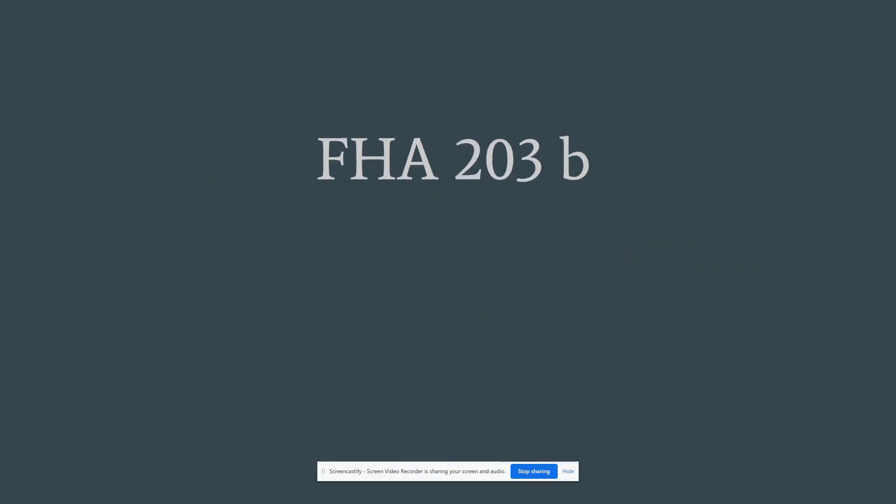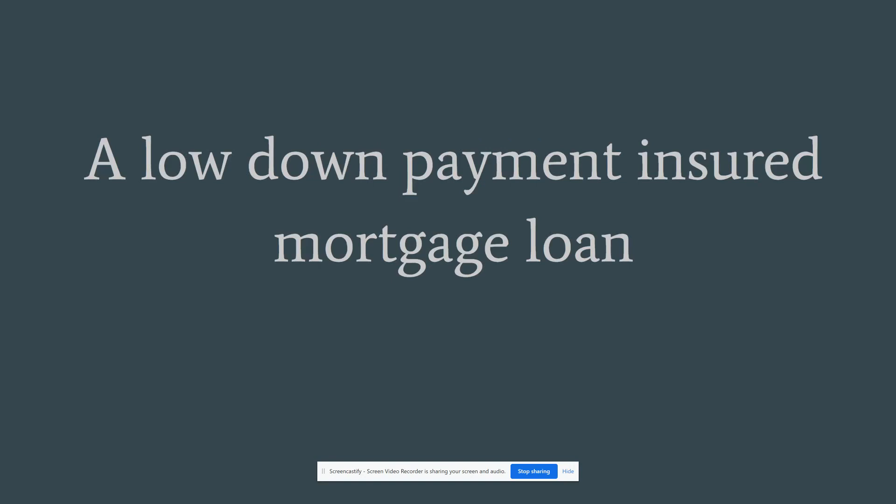FHA 203B. This is a low down payment insured mortgage loan insured by the FHA, and it's typically your most common type of FHA loan.